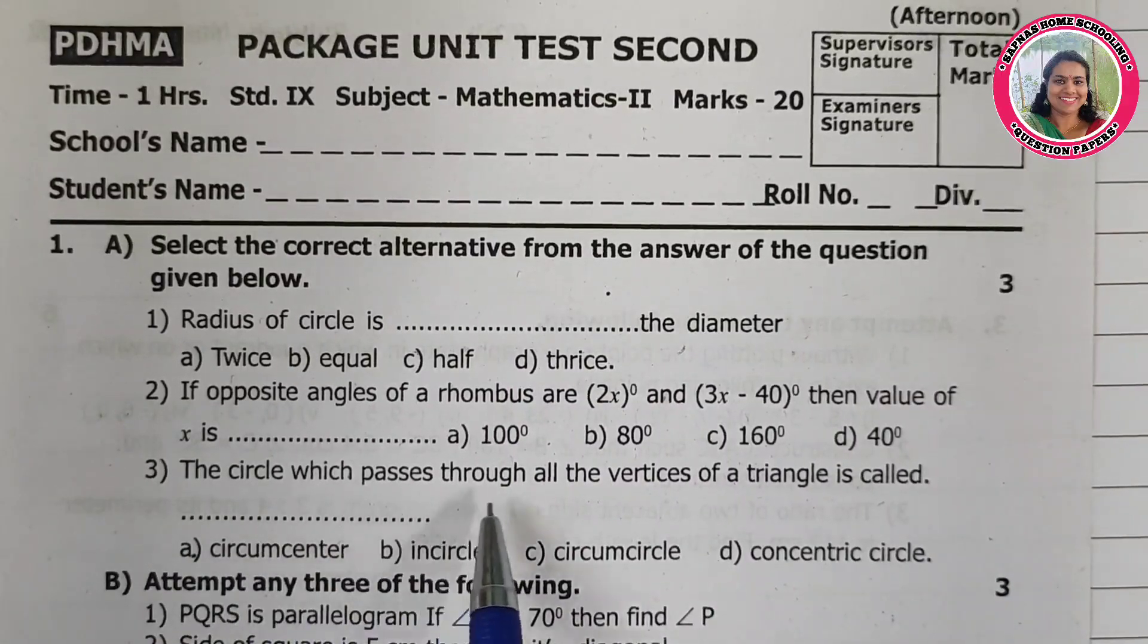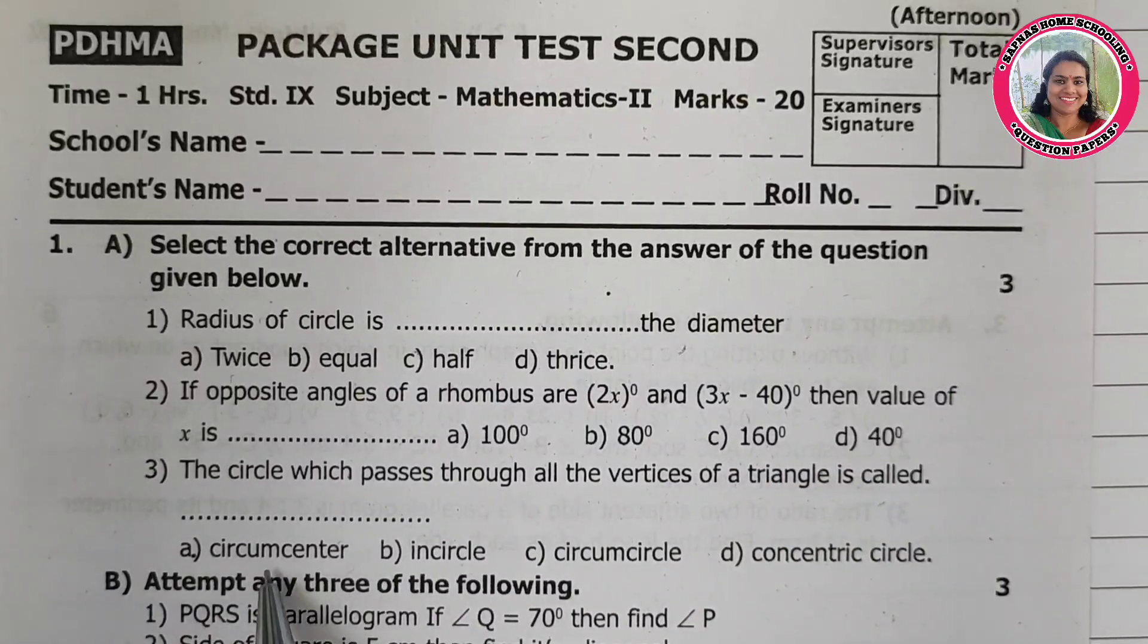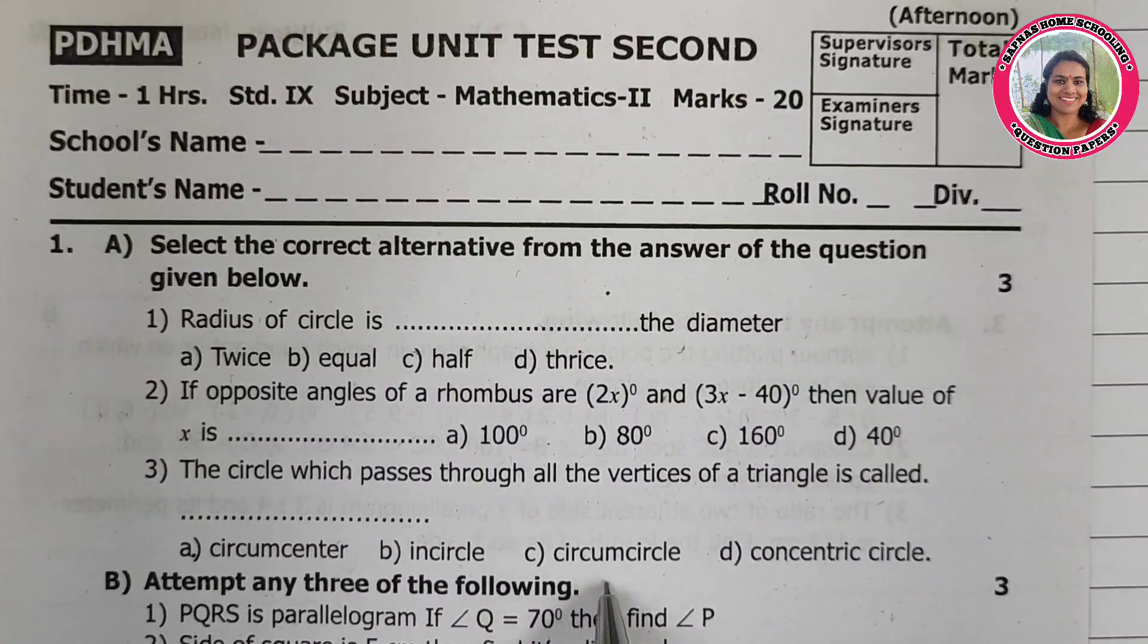The circle which passes through all the vertices of a triangle is called circumcenter, incircle, circumcircle, or concentric circle.